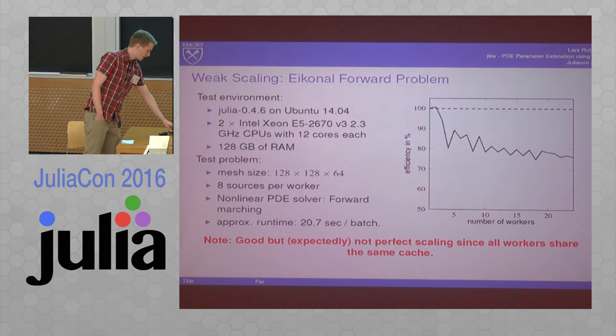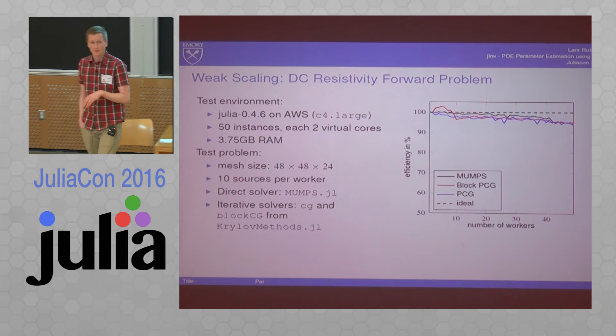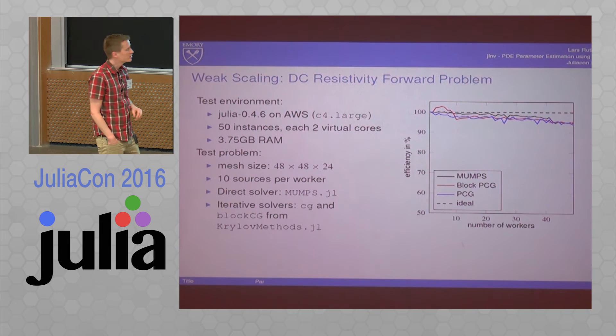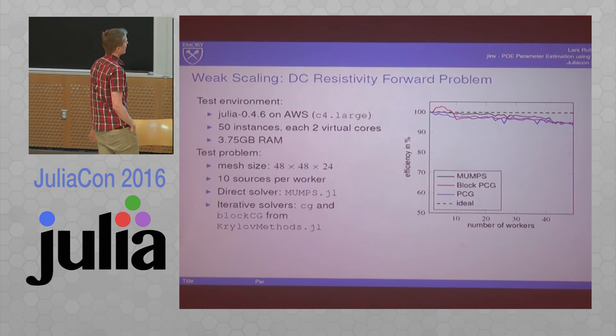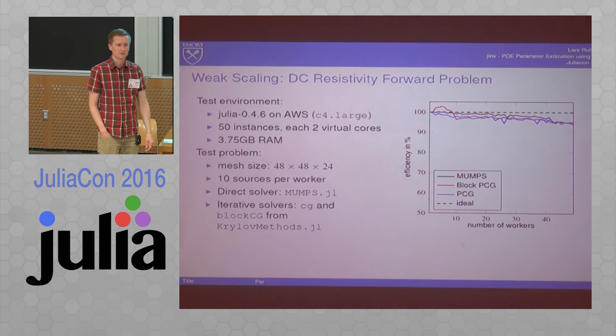To convince ourselves that Julia really is a good way to go, we did one experiment on the AWS with 50 workers. Here we use the problem that I introduced, the div-sigma-grad problem. We used all solvers that we currently recommend using for that problem. So we compared mumps, a block version of CG, a usual PCG. You can see that this scales really, really nicely up to like 50 workers or so.